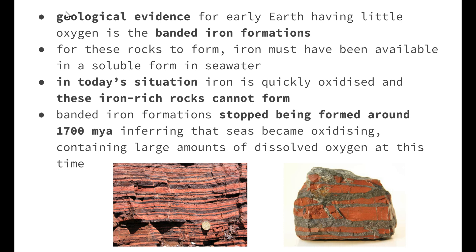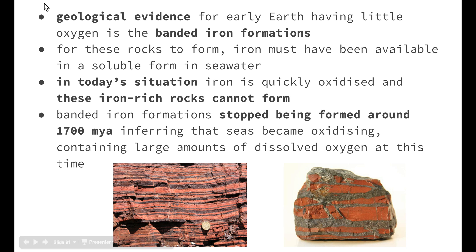Geological evidence for the early earth having little oxygen is what we call banded iron formations. For these rocks to form, iron must have been available in a soluble form in seawater. In today's situation, iron is quickly oxidised and these iron-rich rocks can no longer form. They stopped being formed about 1.7 billion years ago, inferring that the seas became oxidising — containing large amounts of dissolved oxygen at this time.